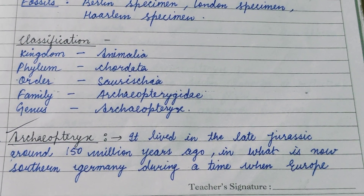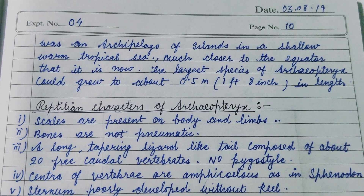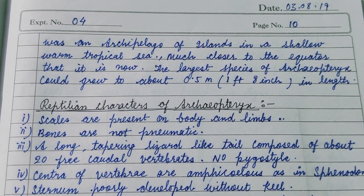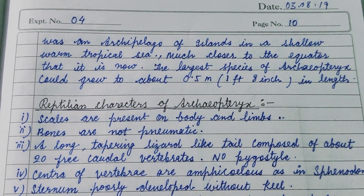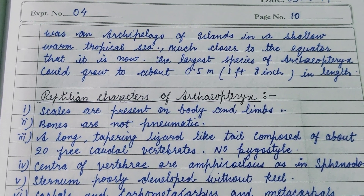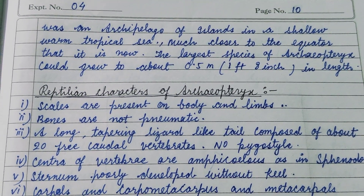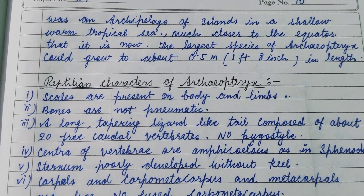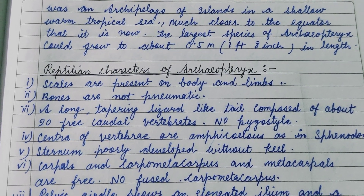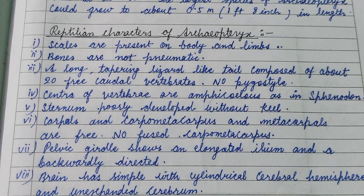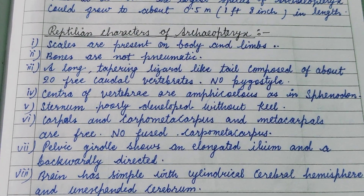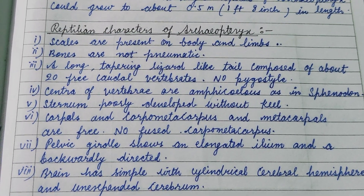Archaeopteryx lived in what is now southern Germany, during a time when Europe was an archipelago of islands in a shallow, warm tropical sea much closer to the equator than it is now. The largest species could grow to about 0.5 meters, that is 1 foot 8 inches in length.